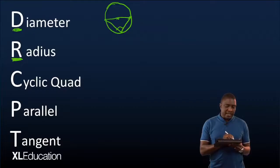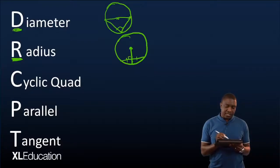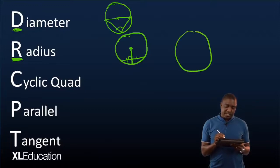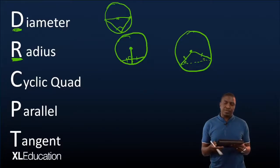Look for any radius and all the other theorems that are connected to the radius. The common case is where two radii are equal, and it gives you an isosceles triangle — this angle will definitely become equal to that angle. When you are done with the radius, check if there is any cyclic quad in your diagram.